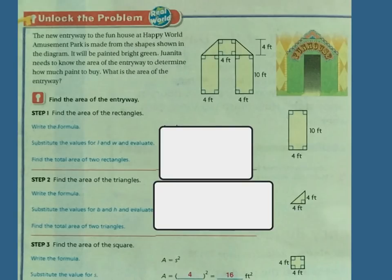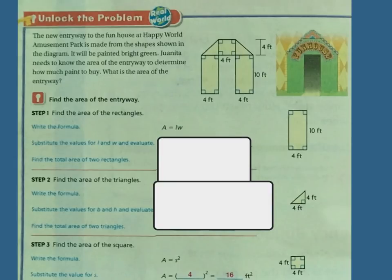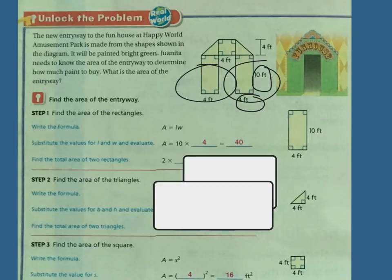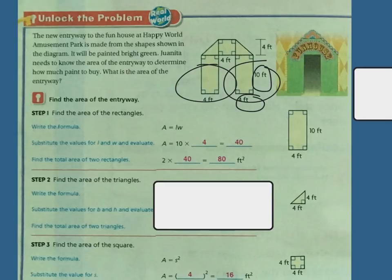We're going to take this apart one at a time. First, we're going to find the area of the rectangle. So I find the area of this rectangle and add it to the area of this other rectangle, then find the area of the triangles, and add all those pieces together. My formula for the rectangle is area equals length times width. The length times width is 10 times 4, because here is my length — that's 40. And there are two rectangles, so 40 plus 40 is 80 square feet.